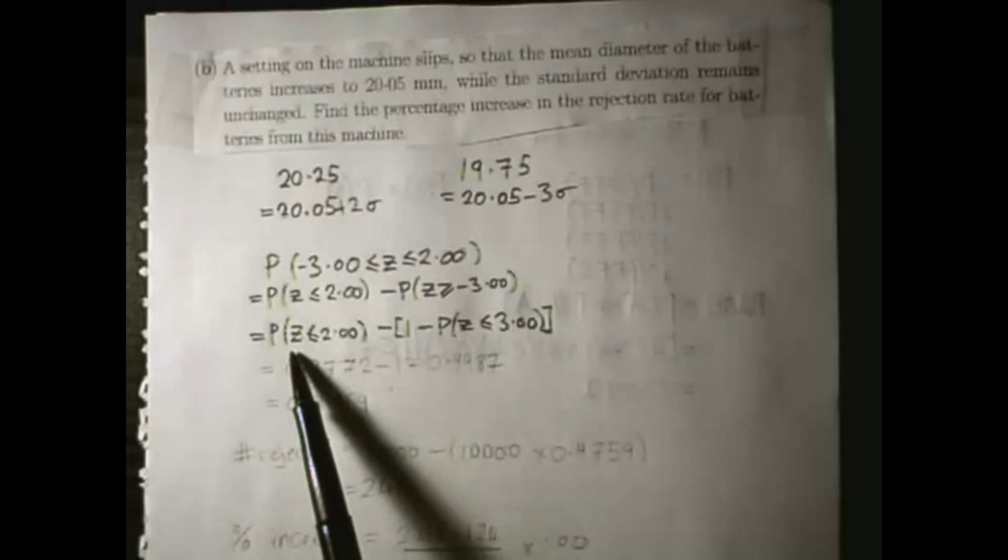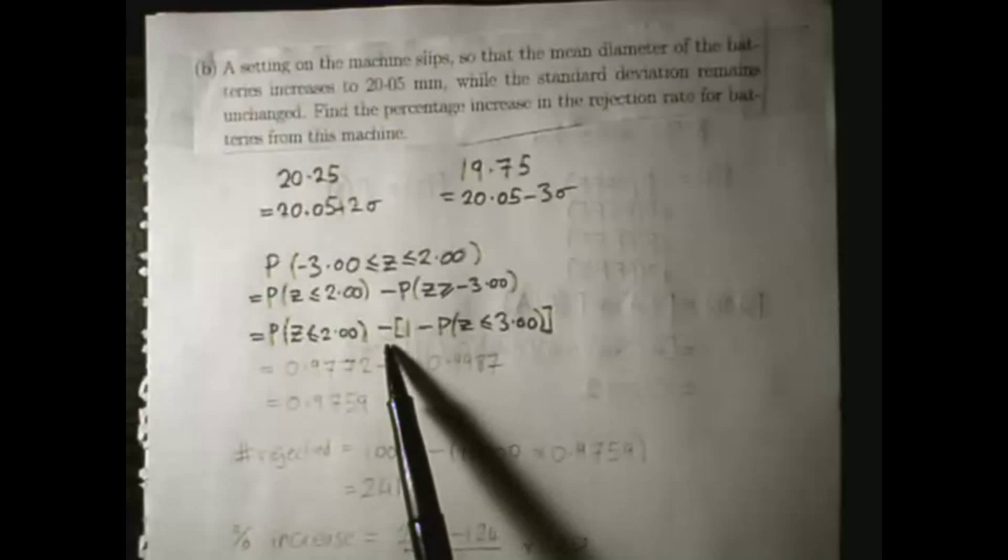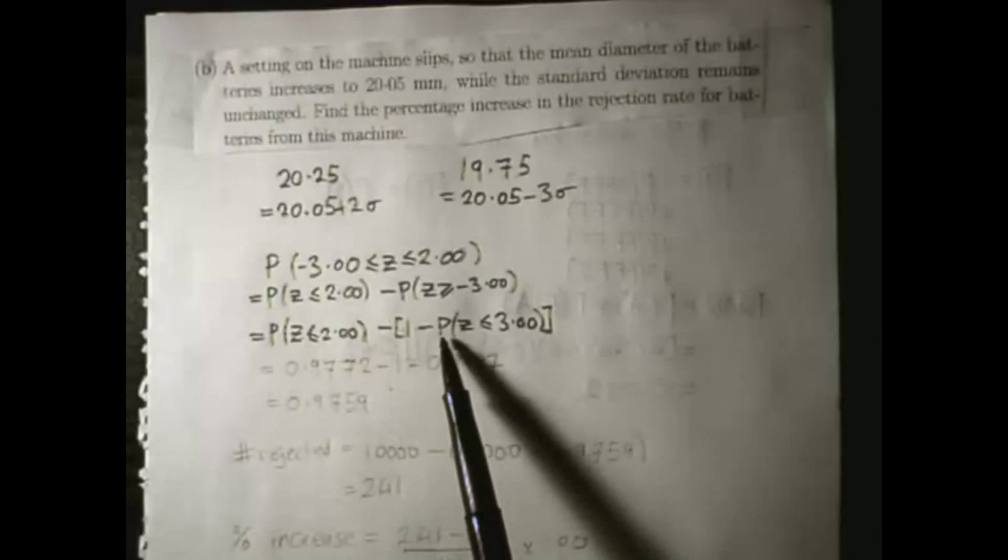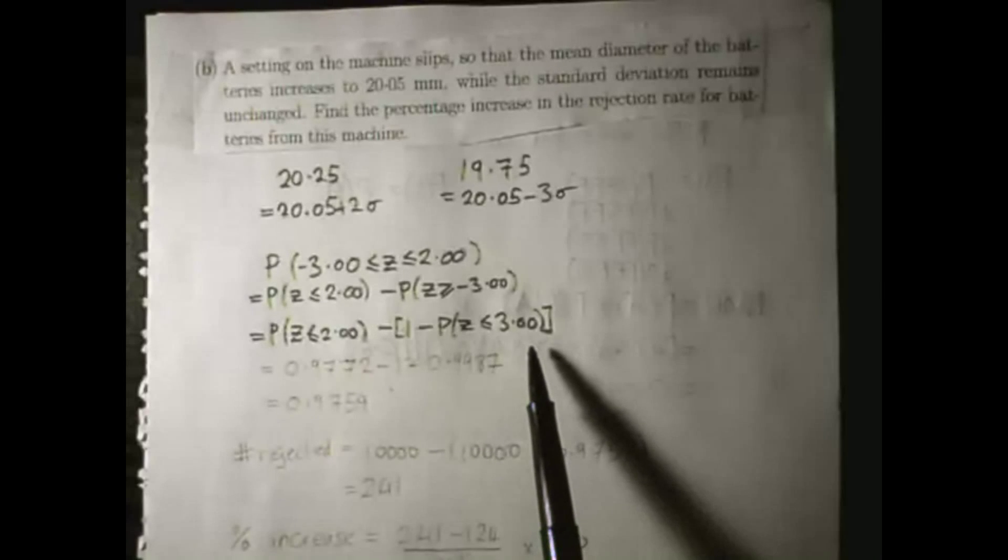it's where the diameter is less than 2 standard deviations minus 1 minus where the diameter is less than 3 standard deviations. And that's just a rule you can follow all the time.